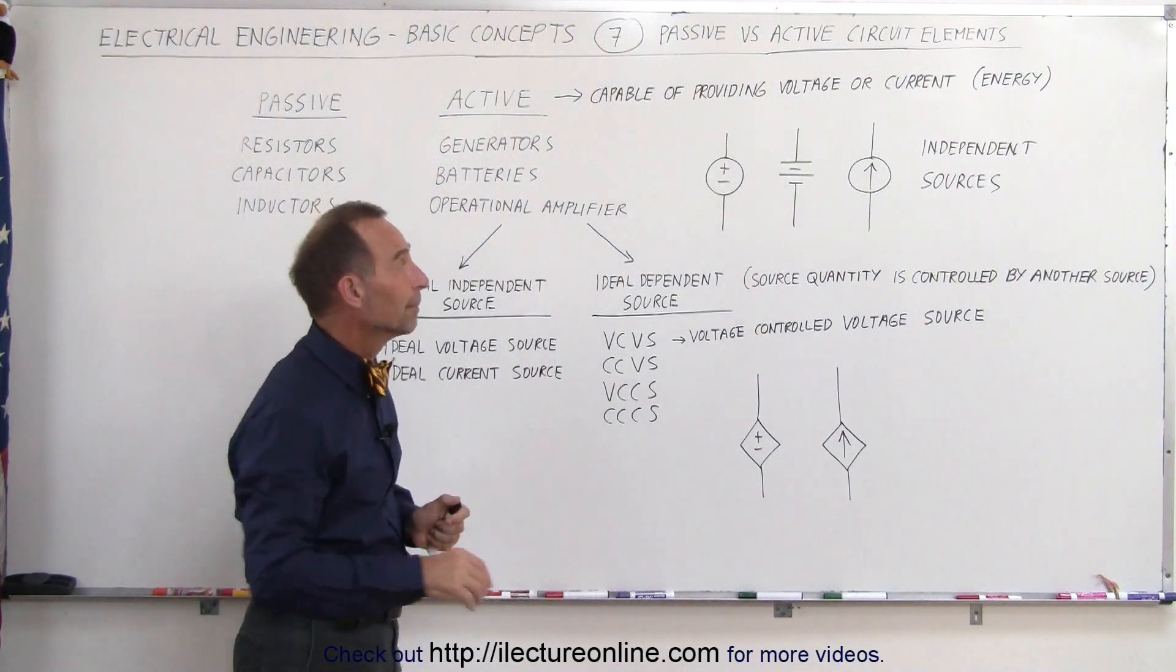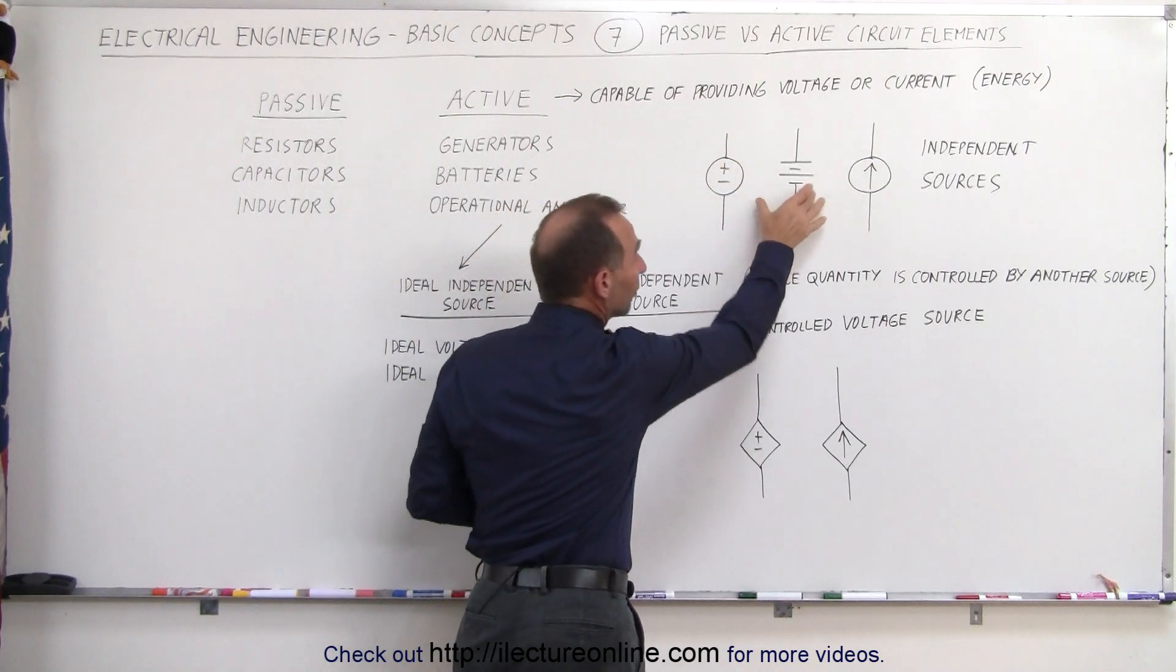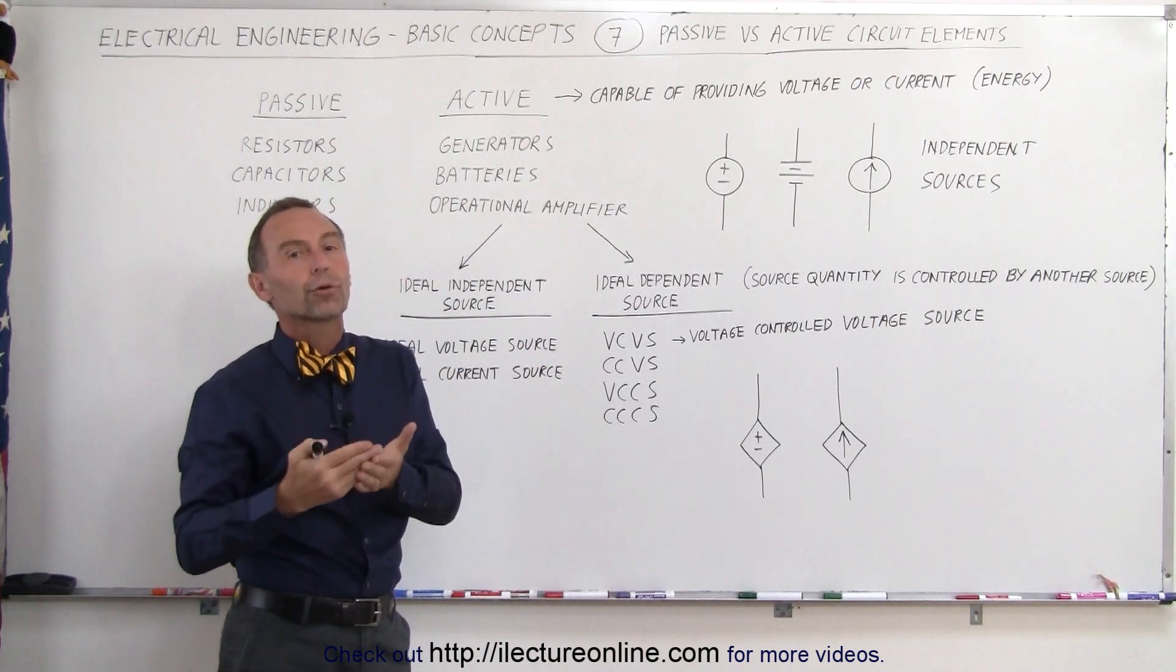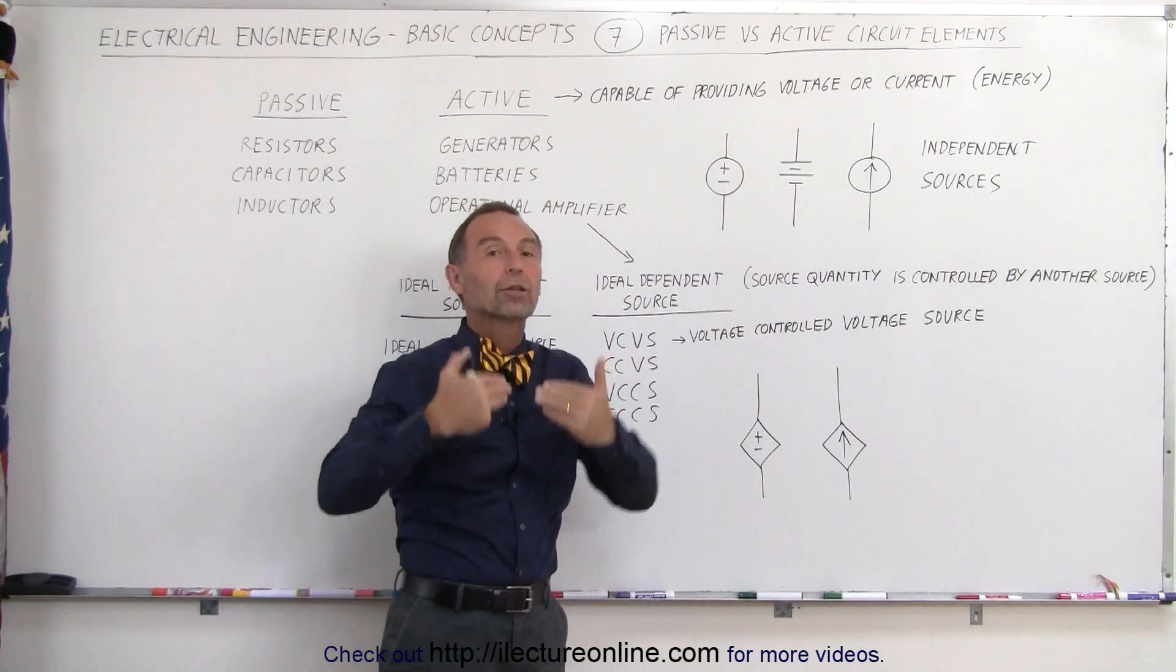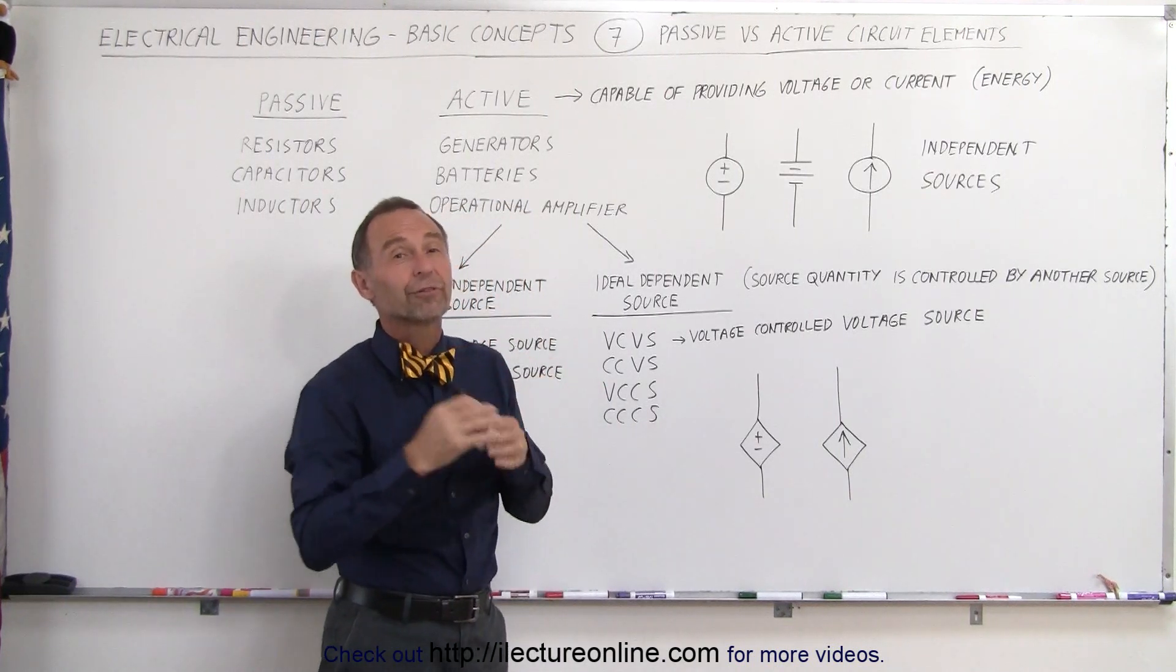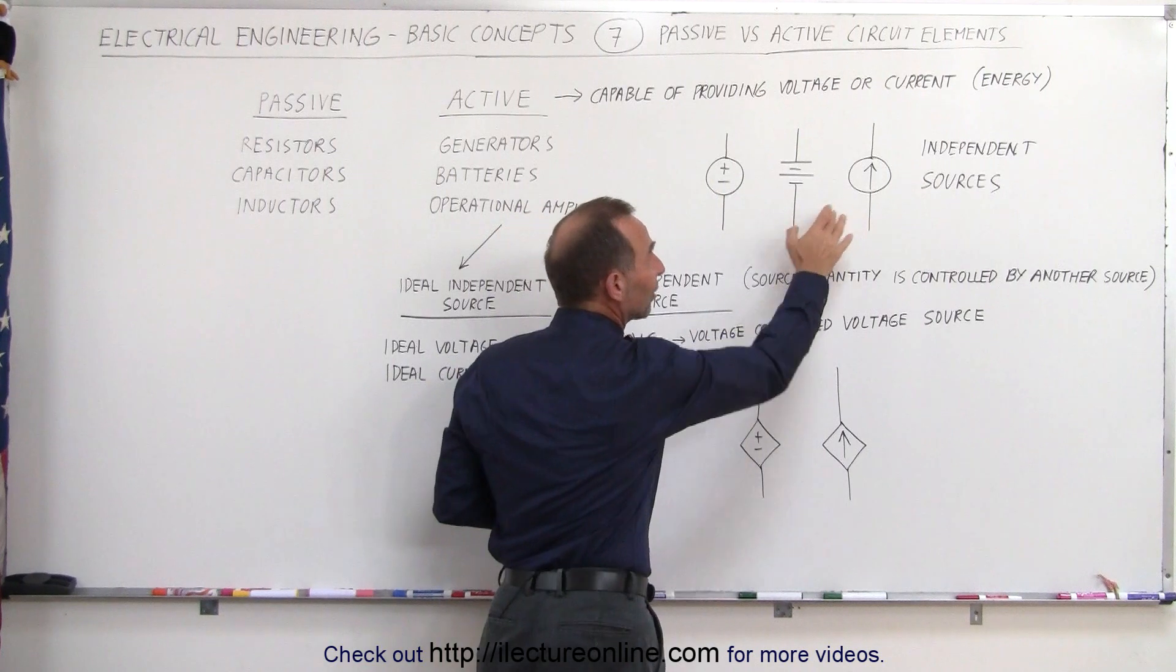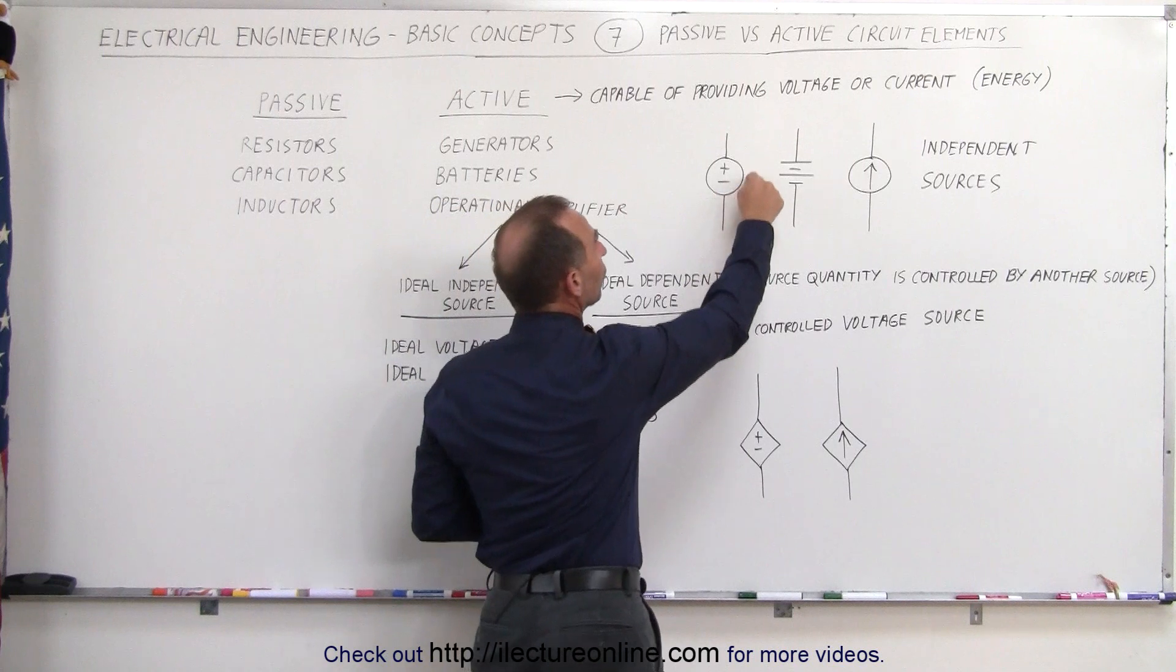The symbolism is important here. If it's a completely independent source then we draw a little circle around it. A battery can be assumed to be somewhat of an independent source and can potentially produce all of the current and provide all the voltage required for the circuit. Although batteries are subject to a drawdown in current if the circuit demands too much, it's approximated to do so. We can have voltage sources or current sources that are independent and provide all the current and voltage required by the circuit. If so we draw little circles around them.